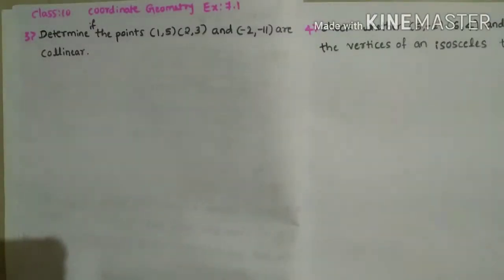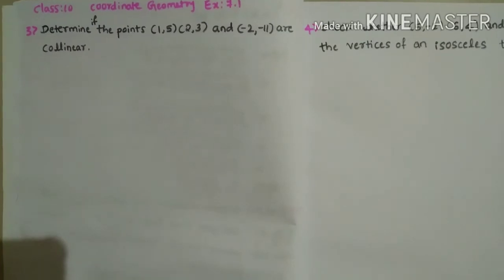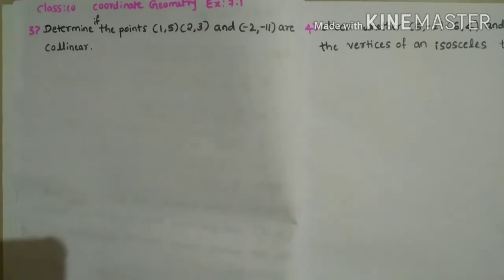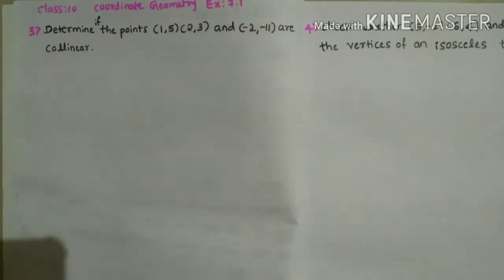Hello children. In this video we are going to learn Class 10 Coordinate Geometry Exercise 7.1, the third and fourth sums. First we'll see the third sum: determine if the points (1,5), (2,3), and (-2,-11) are collinear. First, understand what collinear means.